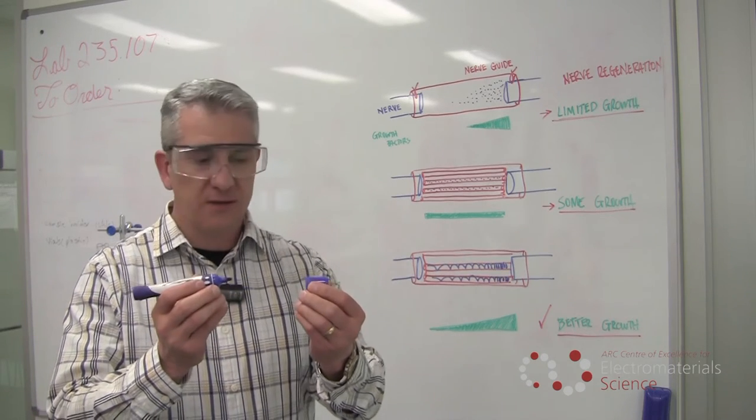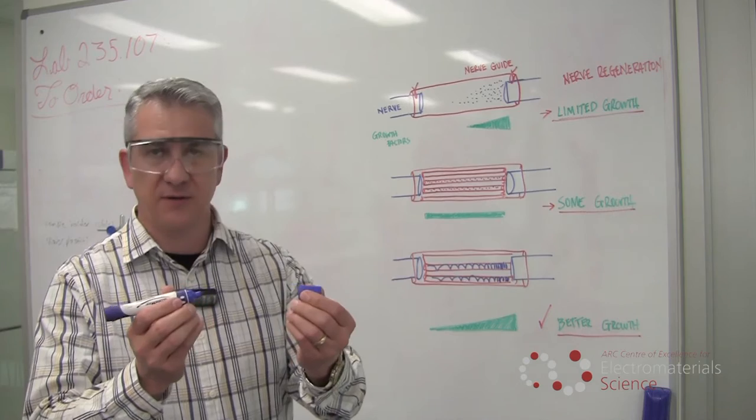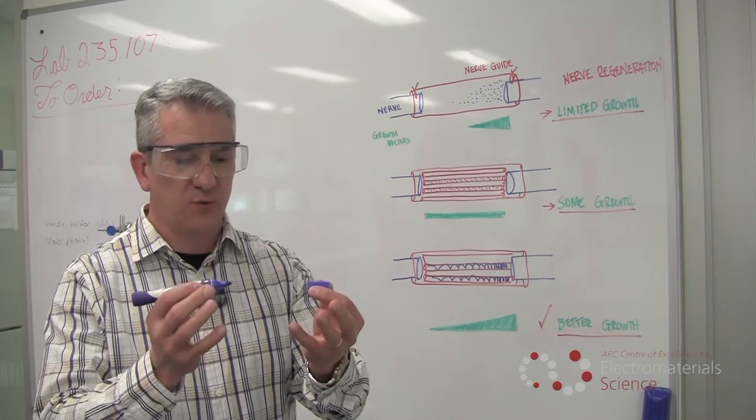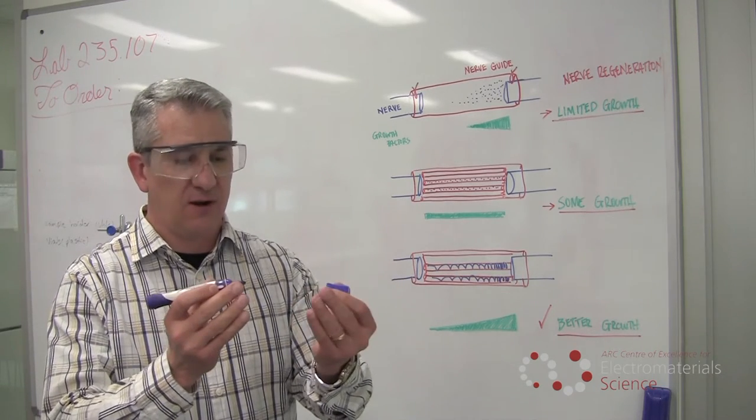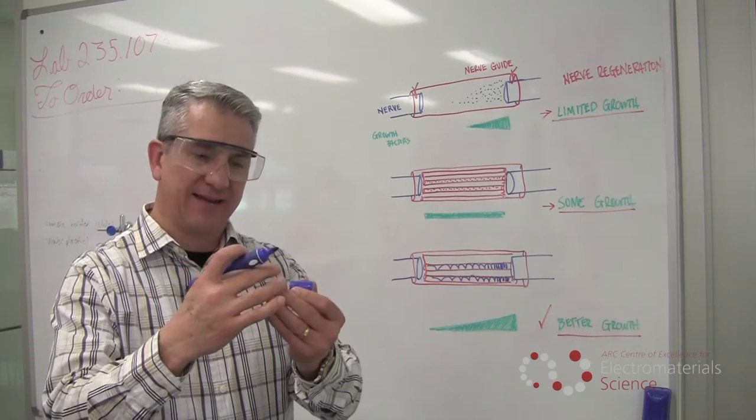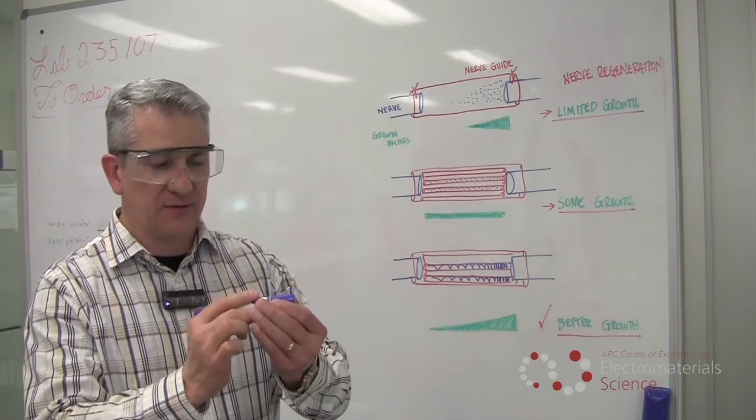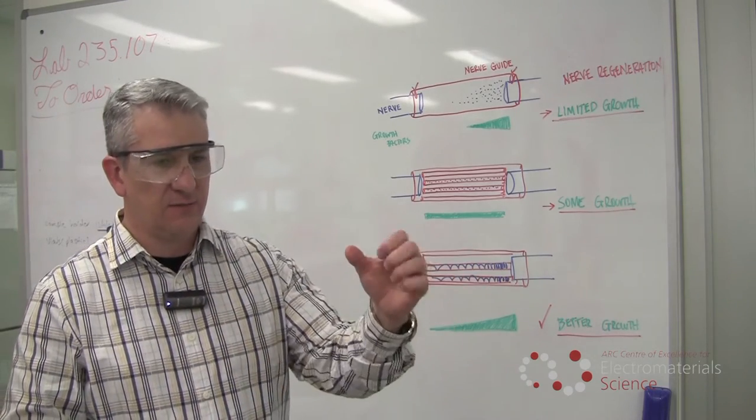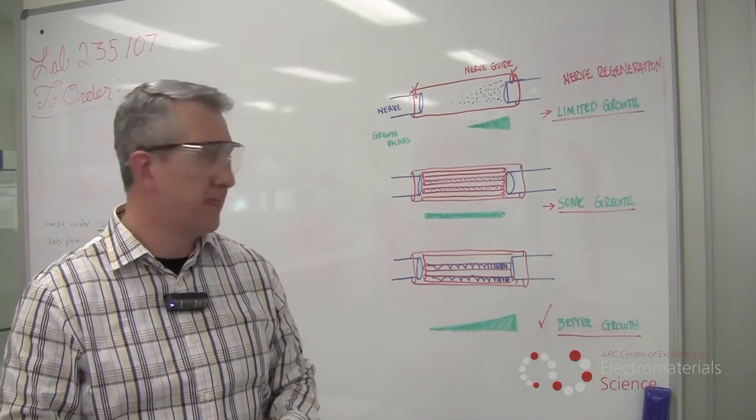So tissue engineers and bioengineers have been looking for ways to create a bridge, a cellular or biomaterial bridge, that will allow the neurons to grow back through that gap and reconnect to the muscles and the skin, regaining function.